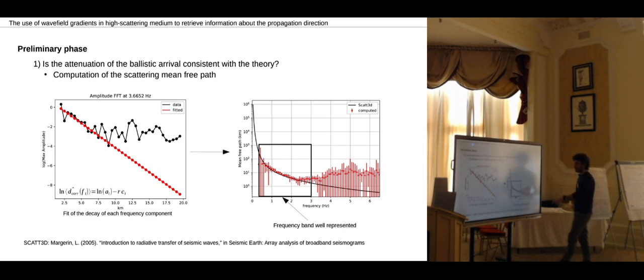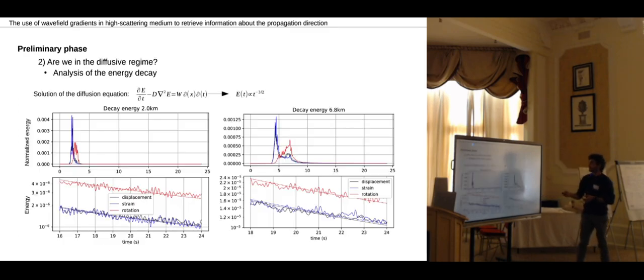The first thing that we looked at is the mean free path, and we compared the mean free path with the theoretical expectation. We saw that there is a nice agreement, at least between 0.5 and 3 Hertz.